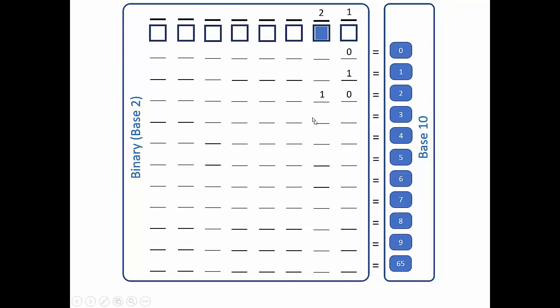So here, if I want to represent 2, I turn this second box on — that's a 1 in that location — and my other box is off. So 2 in binary is 1 0. If I turn both boxes on, I have 2 and 1. 2 plus 1 gives me 3. So turning both boxes on, adding those values together, equals 3.